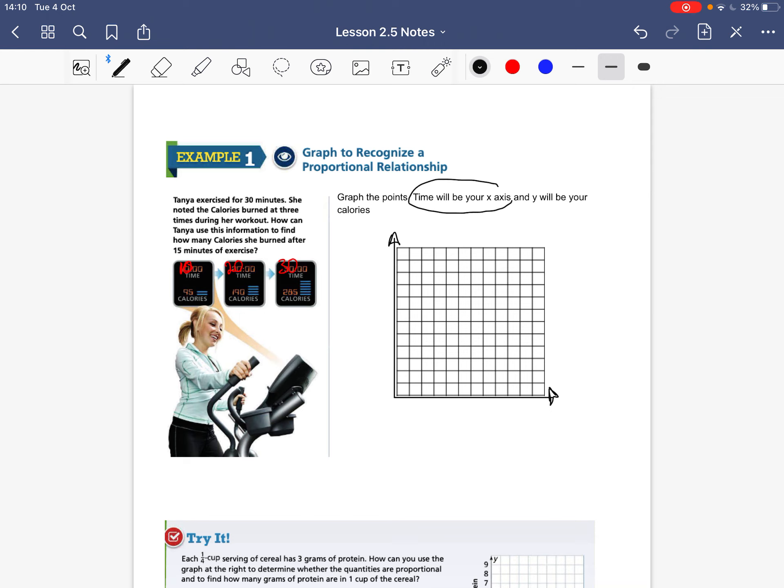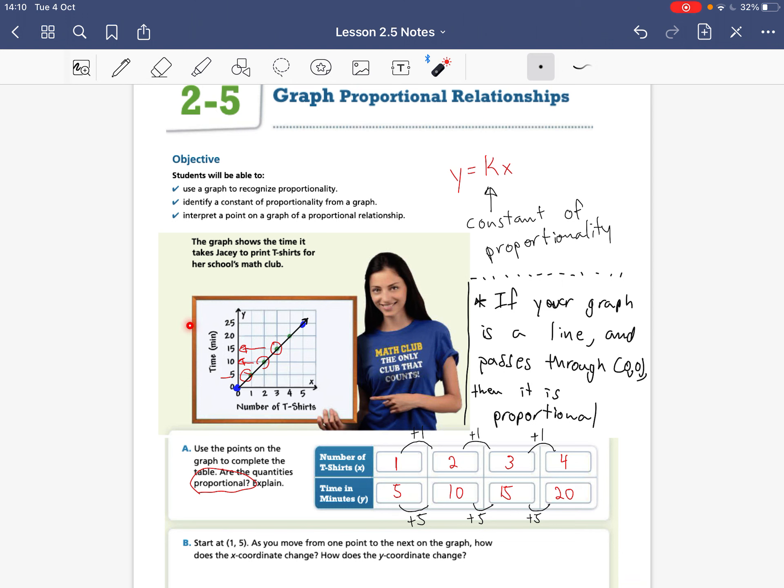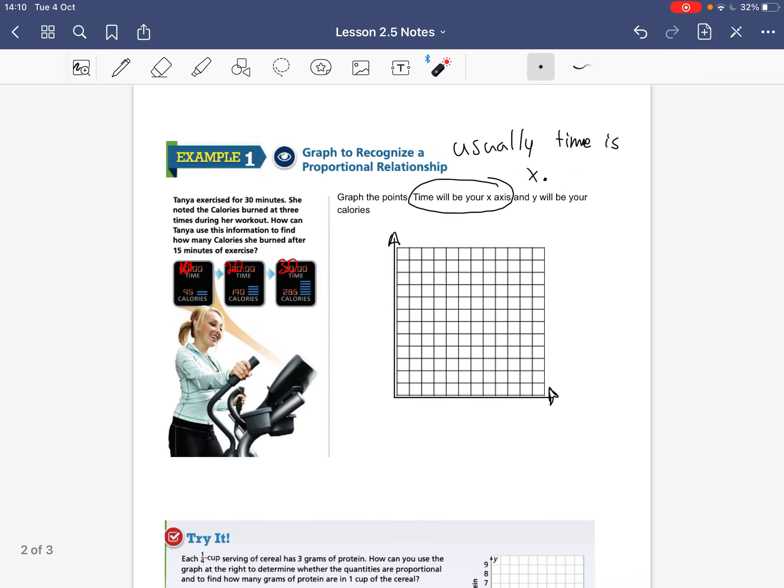And we need to identify what our x values are and our y values are. Time will be our x-axis. Usually time is the x. Usually time is x. Now for over here, we saw that time was not our x-coordinate. But most of the time, pun intended, it is our x values. So our x-axis will be time. And our y-axis will be calories.